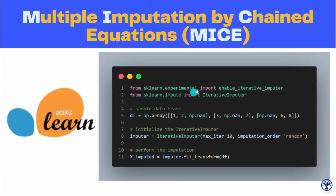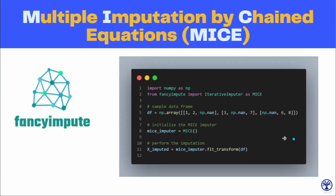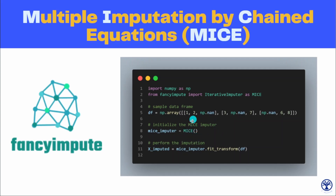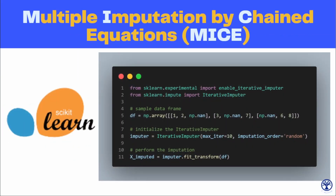If you want to use MICE in sklearn, you have to first enable the experimental module: 'from sklearn.experimental import enable_iterative_imputer'. Then the game is simple — write the same command 'from sklearn.impute import IterativeImputer' and the rest is the same. When initializing the imputer you can add parameters such as maximum iterations (e.g., 210) and imputation order (e.g., random). Previously with MICE in FancyImpute you could also specify similar parameters. The rest of the proceedings of both libraries are exactly the same.